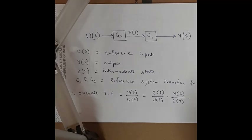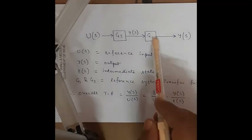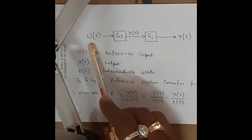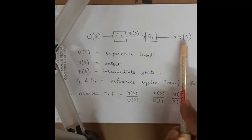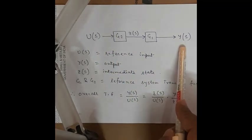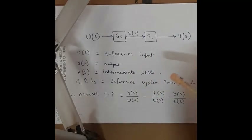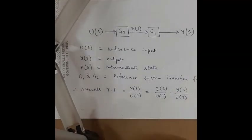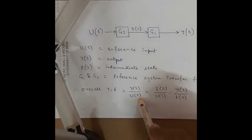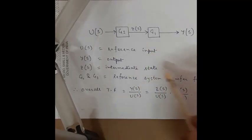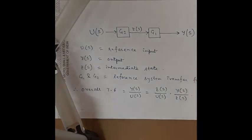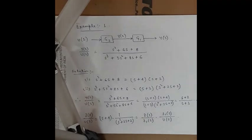For the cascade decomposition technique, we assume two different types of systems or plants: one is G1 and another is G2. We give an input signal U(s) to the system and from that we get the output Y(s). Z is the intermediate state — it may be the input or output of any kind of transfer function. So for this system, the overall transfer function is Y(s)/U(s), which equals Z(s)/U(s) multiplied by Y(s)/Z(s).